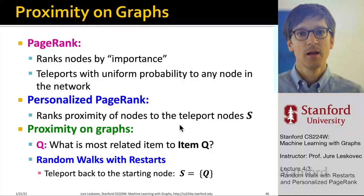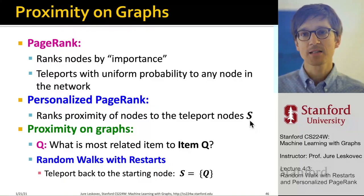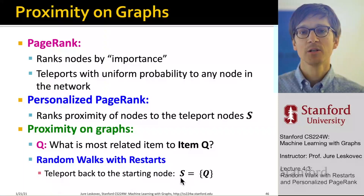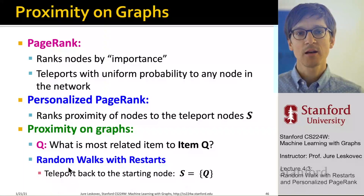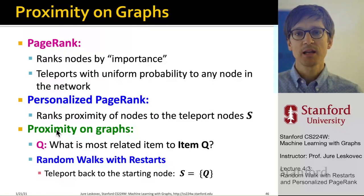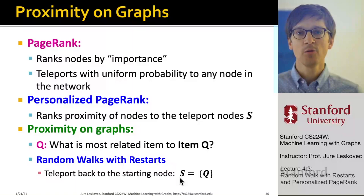There is a set of nodes S that are interesting to the user. Whenever the random walker teleports, it teleports back to that subset S. You can shrink this teleport set S even further to a single node, meaning the random walker can walk, but whenever it decides to teleport, it always jumps back to the starting point S. This is called random walk with restart. PageRank, personalized PageRank, and random walk with restarts are the same algorithm — the difference is only how we define S: all nodes, a subset, or a single query node.